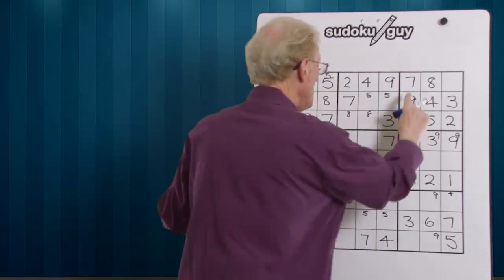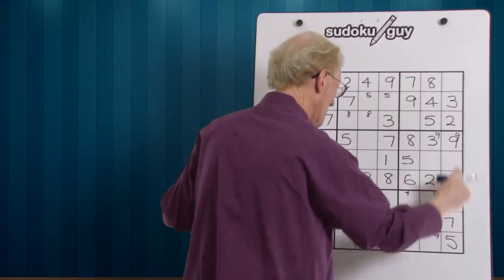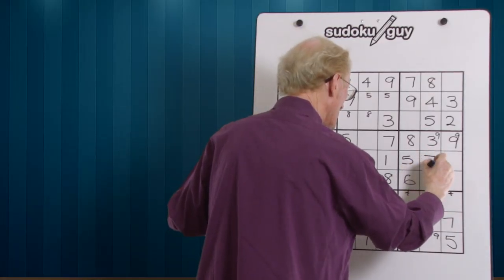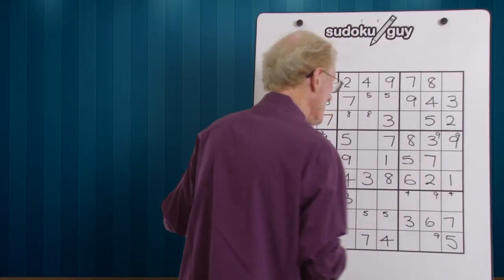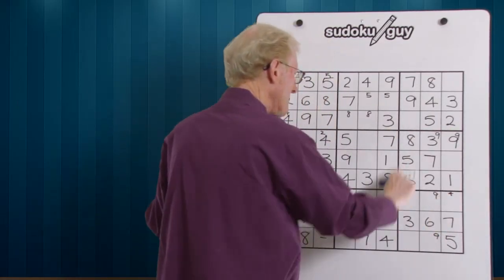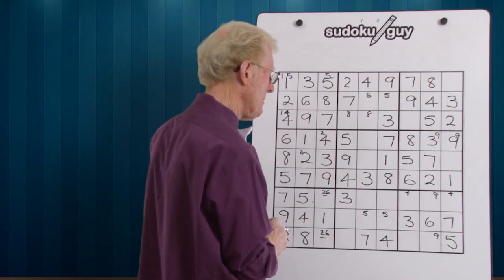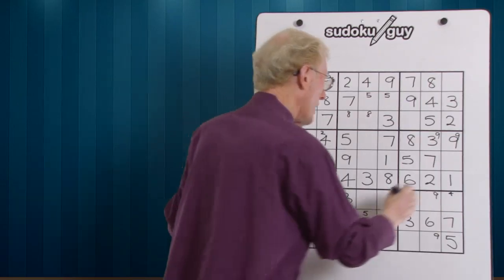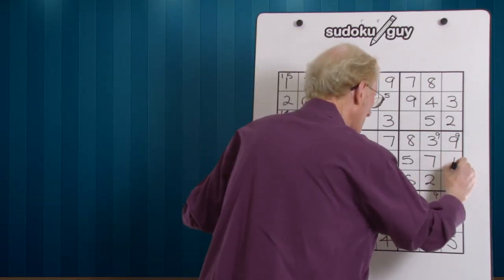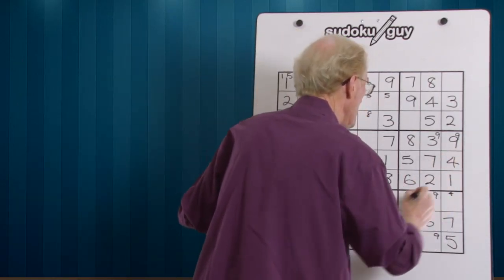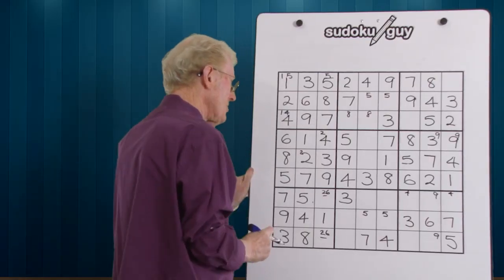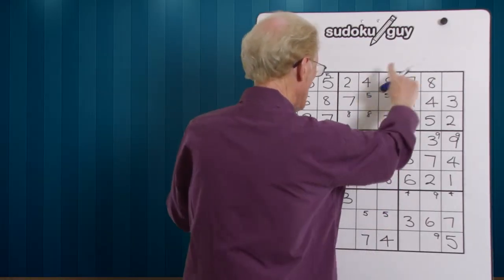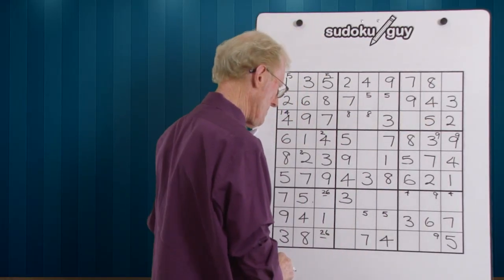We have a left, a right, we have something in the middle here - that can become a seven. Now we have a block that's only got one left. What's the number that's left? One, two, three, four. Wow, we're going like crazy here. So that's what a seven did - all the ramifications of just that seven.